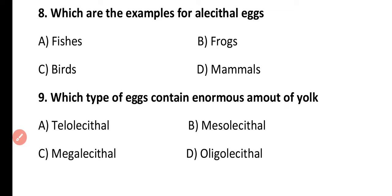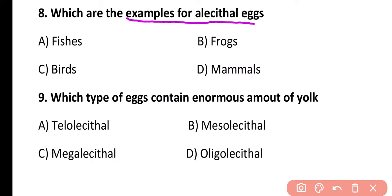Question 8. What are the examples of alecithal eggs? Fishes, frogs, birds, or mammals? The correct answer is option D. In the case of mammals, there is no yolk present in the egg, so mammal eggs are known as alecithal eggs, meaning without yolk.